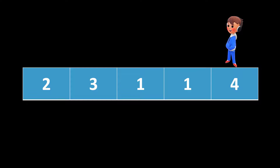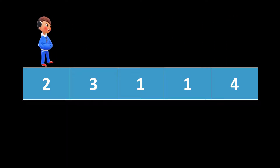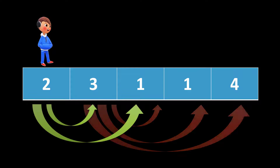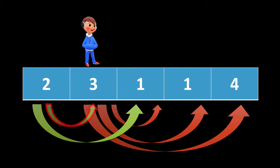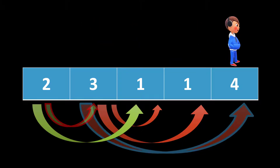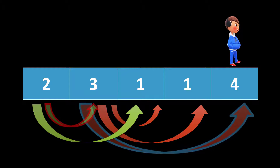If we can reach the last index we will return true, otherwise we return false. As shown in the explanation, if we jump from the zeroth index to the first index using one jump, and then jump three steps from index one to the last index, we have reached the last index and return true. We don't need to care about how many steps we took or whether it is the minimum — we just need to ensure that we reached the last index. This makes the question easier to solve.